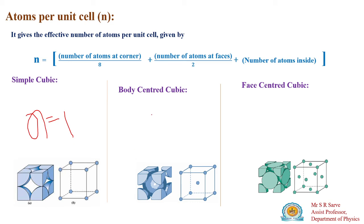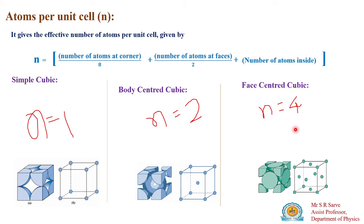For a body-centered cubic unit cell, the effective number of atoms n equals 2, because there is one atom inside the unit cell plus 8 atoms at the corners (8/8 = 1), giving 1 + 1 = 2. For a face-centered cubic unit cell, n equals 4: there are 8 corner atoms (8/8 = 1) and 6 face atoms (6/2 = 3), so 1 + 3 = 4.